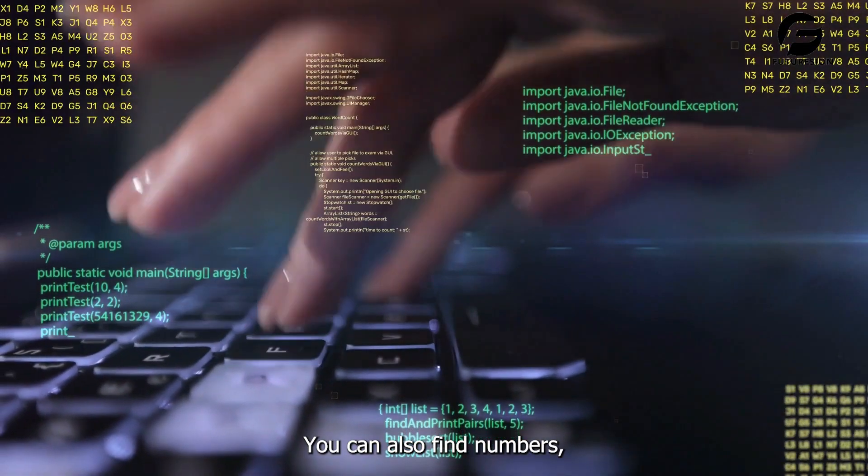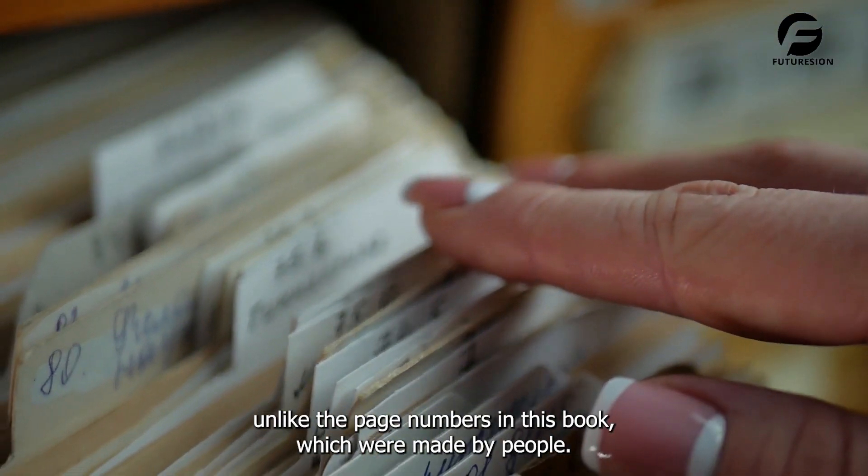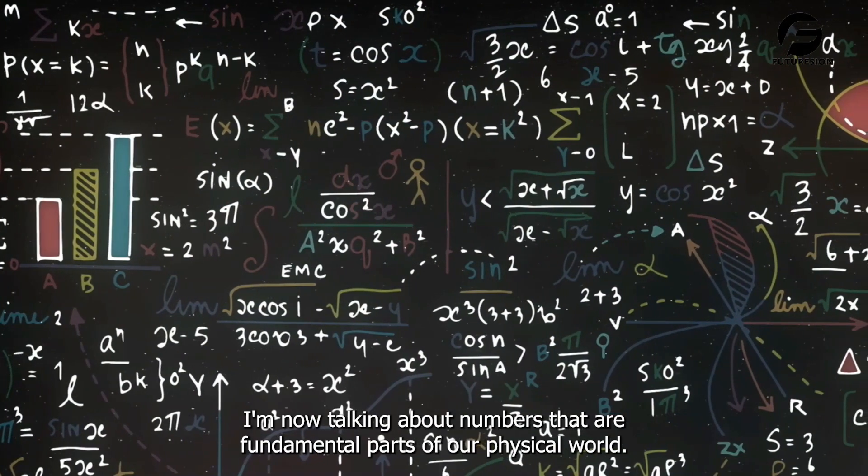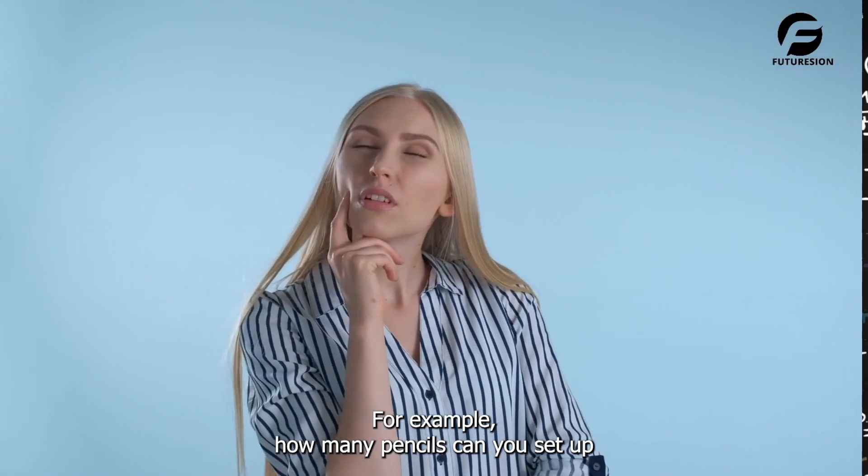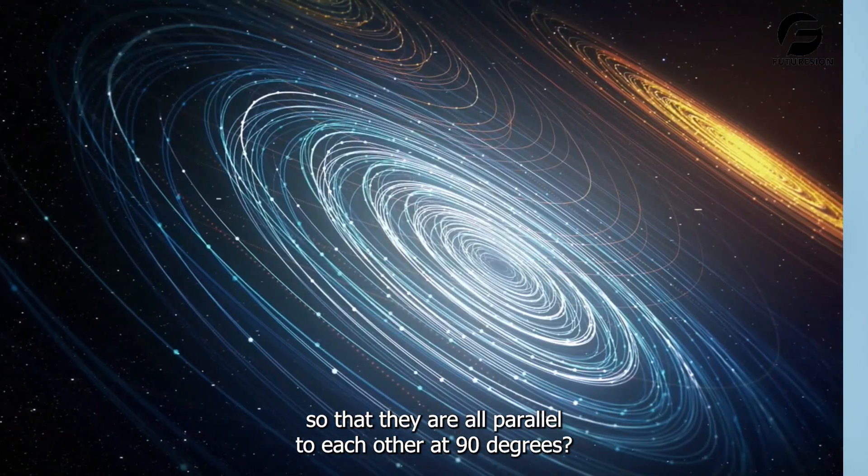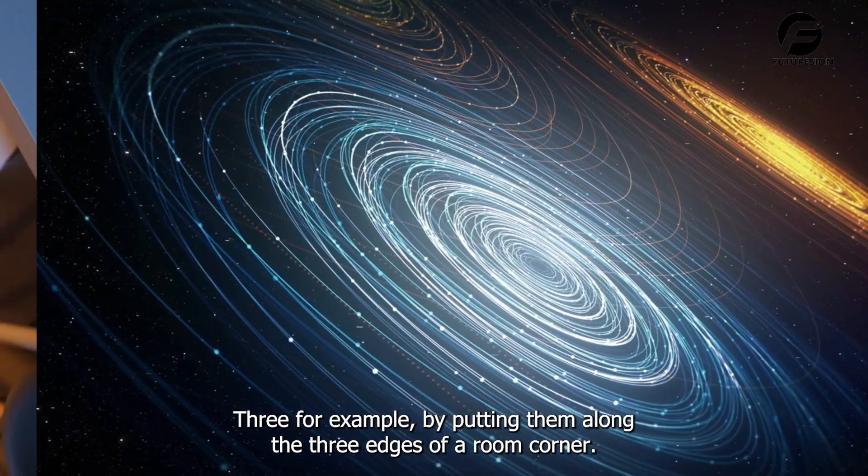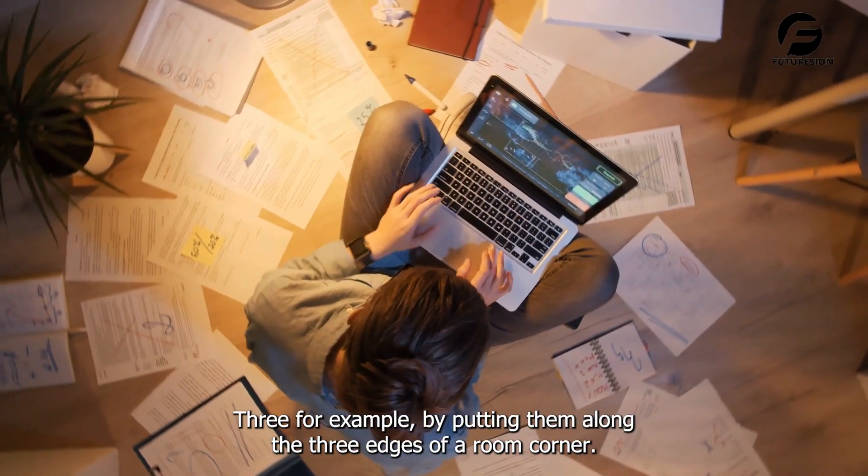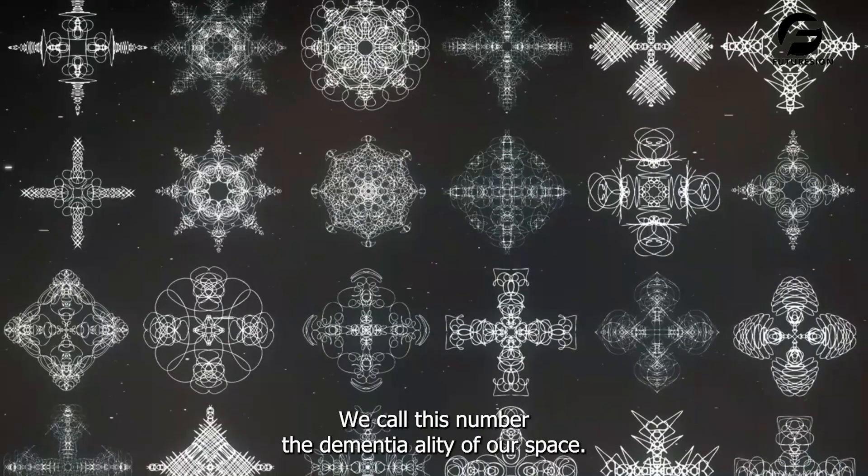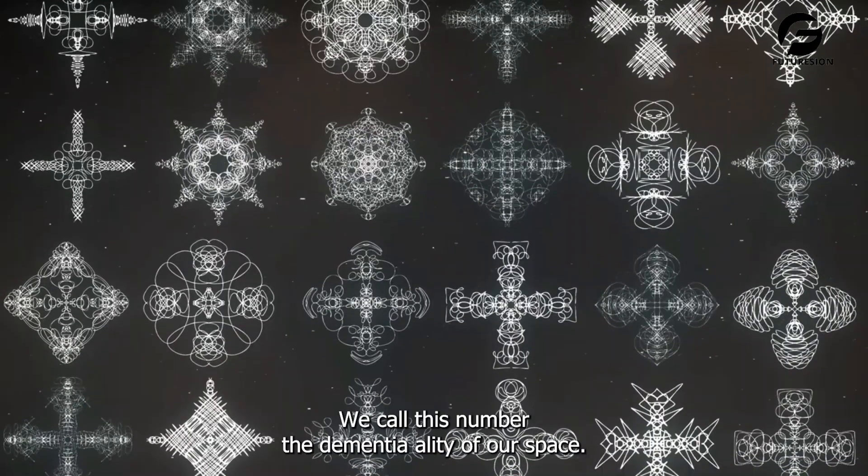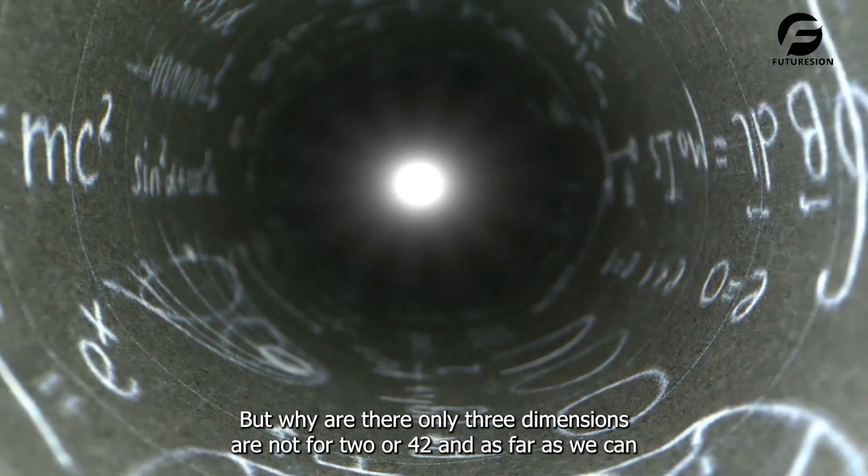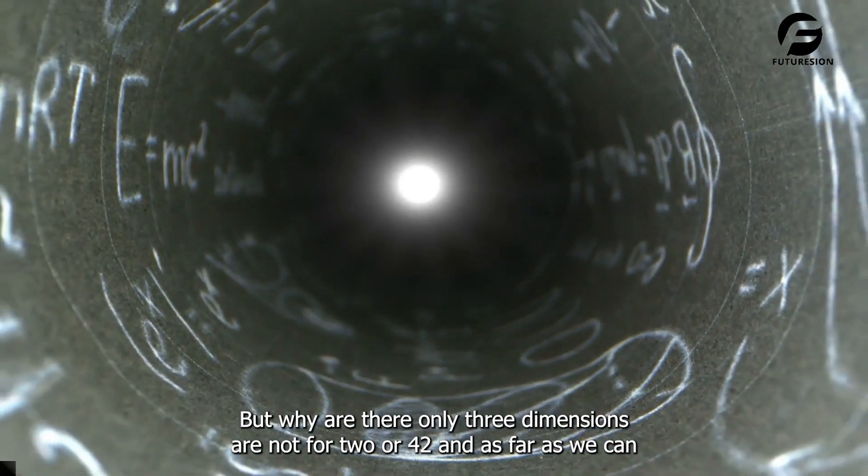Unlike the page numbers in this book, which were made by people, I'm now talking about numbers that are fundamental parts of our physical world. For example, how many pencils can you set up so that they're all parallel to each other at 90 degrees? Three. For example, by putting them along the three edges of a room corner. How did that number three get there so fast? We call this number the dimensionality of our space. But why are there only three dimensions, and not four? Two. Or 42.